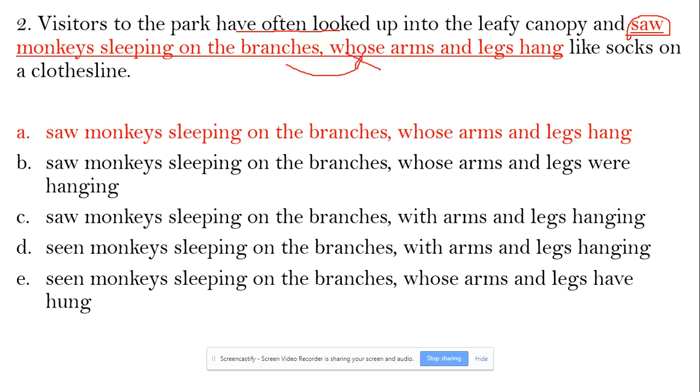A out, B out, and E out. Now C and D - C has the same problem as in A: 'saw,' right? It should be 'have seen,' the correct verb. That's why C is out. D is the best choice.